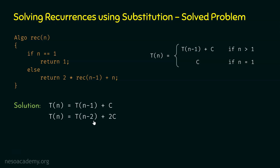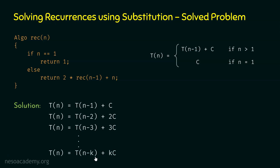Now the pattern is clear: here we have 1 and 1C, then 2 and 2C, then 3 and 3C. So if we proceed up to T(n-K), we must have K times C. Therefore, the generalized expression is: T(n) = T(n-K) + K·C. T(n-K) is the time required to solve REC(n-K).